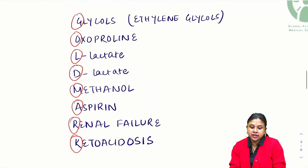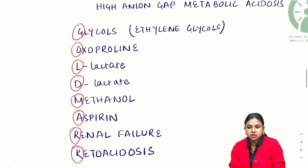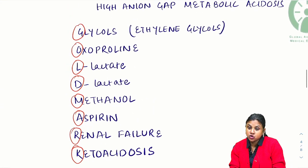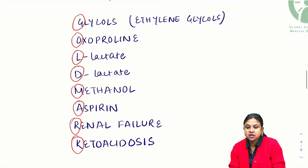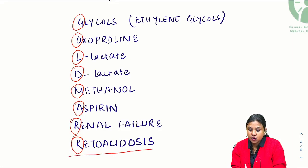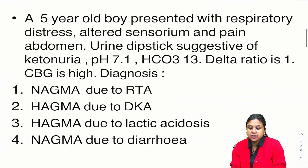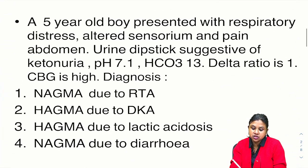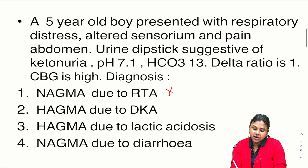Let us come back and look at the causes of high anion gap metabolic acidosis. There was no mention of glycol, oxoprolin, lactates, methanol poisoning, aspirin poisoning, or renal parameters. But it is mentioned that urine dipstick is positive for ketoneuria—ketones. So it is because of ketoacidosis. We understood that it is a high anion gap, so it is not normal anion gap because of RTA, and it is not normal anion gap because of diarrhea.